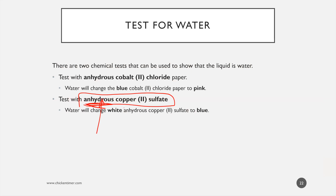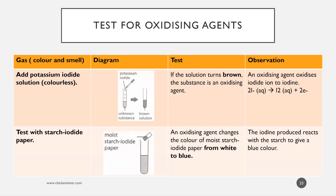Now for water - anhydrous copper sulfate is white. If you add water, the white color turns blue. It's like a powder, similar to how silica gel behaves.